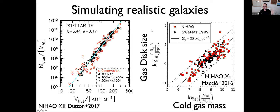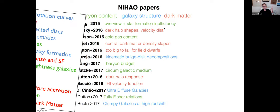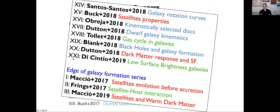We have analyzed our galaxies extensively in their luminous component and they perform very well across many observational relations. This gives us confidence to use them to explore what happens to the dark matter component.